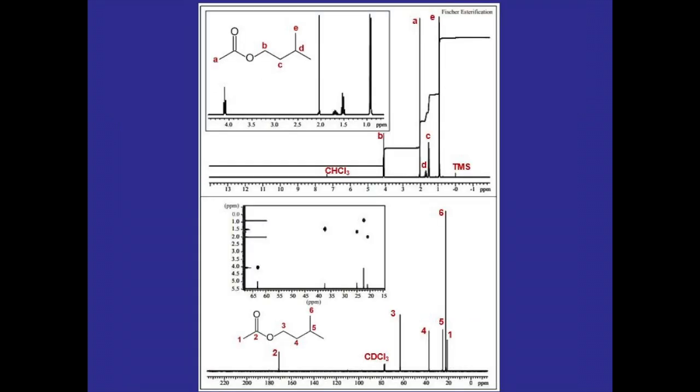Once you're done, this is what each NMR sheet should look like. You should have the molecules drawn out, all of the hydrogens and their corresponding peaks labeled with letters, and all the carbons and their corresponding peaks labeled with numbers.